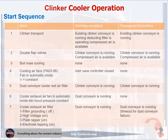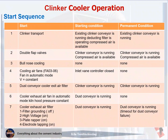Clinker cooler operation — start sequence. This table has steps to run the cooler, divided into several important steps. Step 1: Start clinker transport. Starting condition: existing clinker conveyor is running, dedusting filter is operating, compressed air is available. Permanent condition: existing clinker conveyor is running. Step 2: Start double flap valves. Starting condition: clinker conveyor is running, compressed air is available.